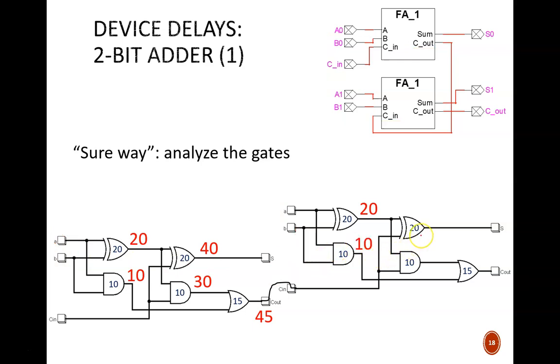This next XOR gate is where we really see the compounding delays of devices placed in series. The starting delay is 45 nanoseconds, taken from this C-OUT signal. Adding that to 20 yields 65 nanoseconds. Similarly, this AND gate starts at 45 and 10 is added to it, yielding 55 nanoseconds.